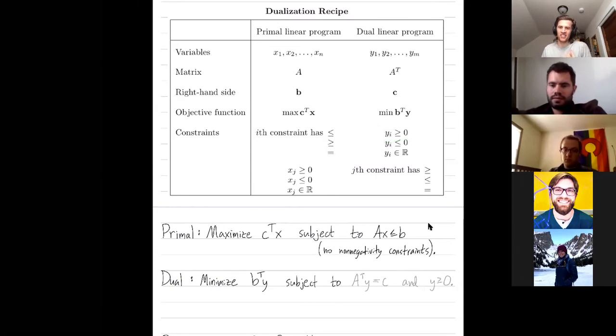I'm just following this recipe in this table. We'll do an example of actual numbers. But questions so far?